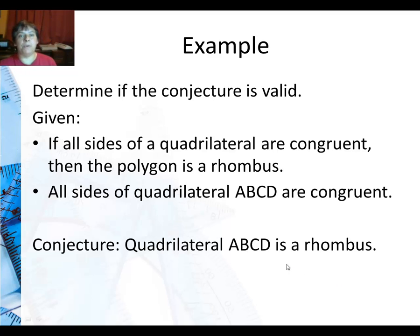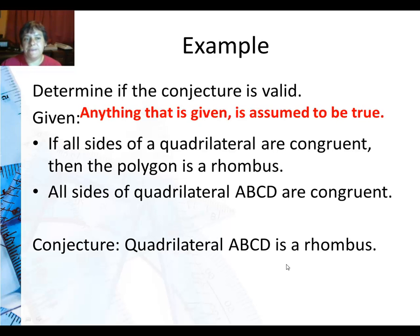So here's our example. Determine if the conjecture is valid. And given, by the way anything that is given is assumed to be true. And you'll see this a lot in your proofs. We'll give you some givens. Anything we give you as a given is automatically true.